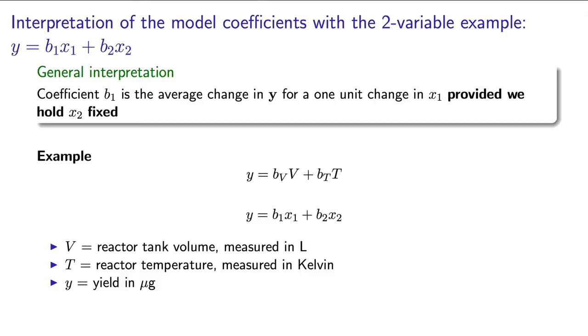The bv coefficient is the equivalent of b1, and the bt coefficient is the equivalent of b2.